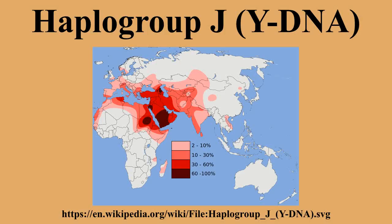The main current subgroups JM267 and JM172, which now comprise between them almost all of the population of the haplogroup, are both believed to have arisen very early, at least 10,000 years ago. Nonetheless, Y-chromosomes F-M89** and I-JM429** were reported to have been observed in the Iranian plateau.